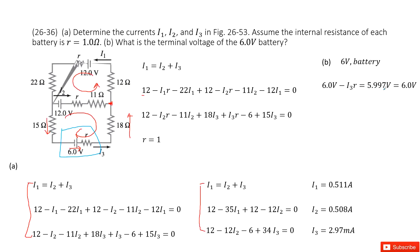So it's very straightforward. We can see this is the EMF for 6V minus the current I3 times R. And then it is 5.997V. It's rounded up to 6V. Thank you.